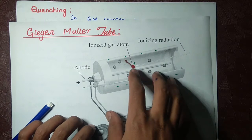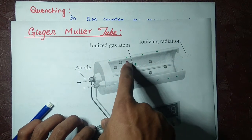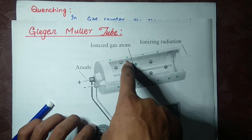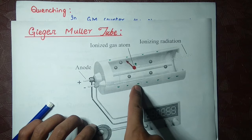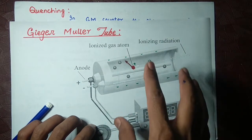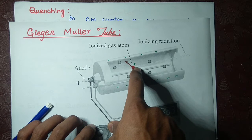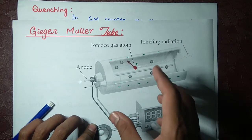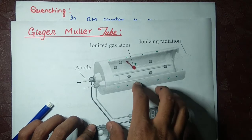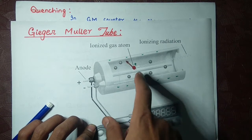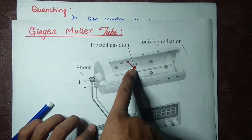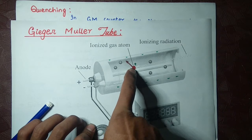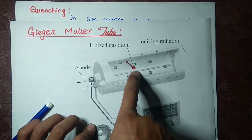...goes to the wall, to the cathode, to get an electron. It attracts more than one electron because of its electrostatic attraction. It attracts more than one electron, and these extra electrons are not required by this neon atom — this ionized gas, this ion.